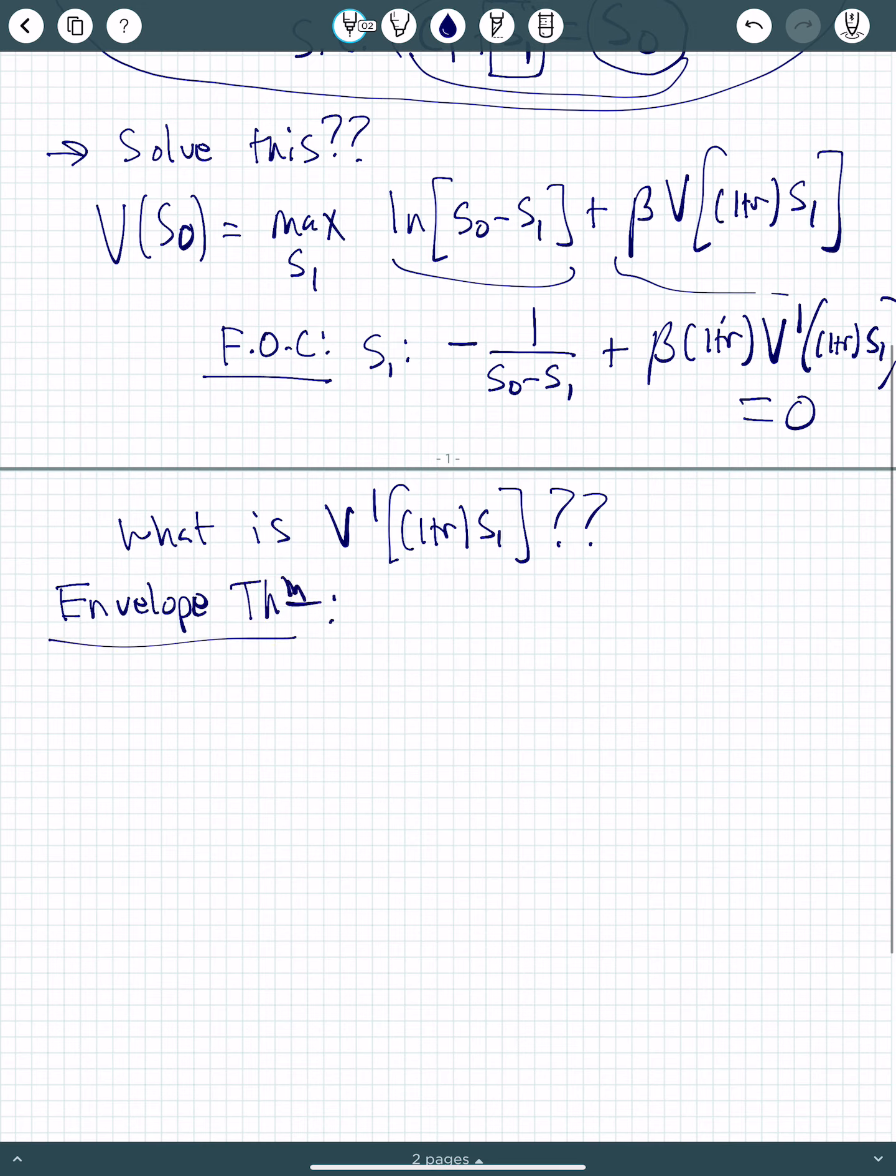Now, there's actually a sequence of theorems that you need first to show that the function v is actually differentiable. So it's never a given in these cases that the function is differentiable. There's a theorem called Benveniste-Schenkman theorem, which shows that the value function is actually differentiable. But that's a much more advanced technical point.